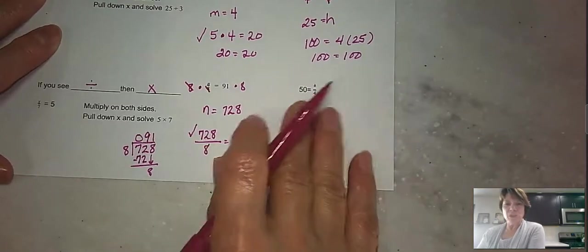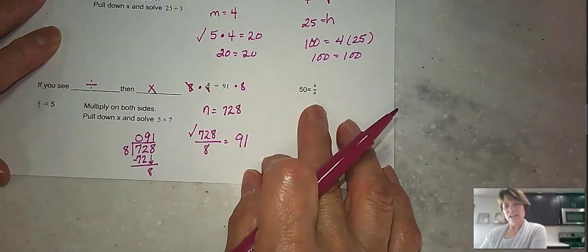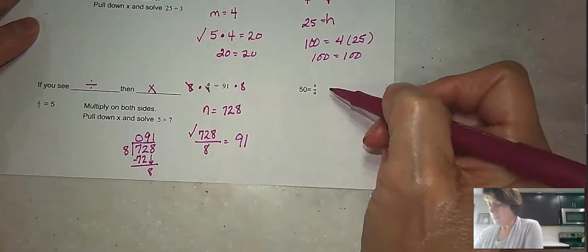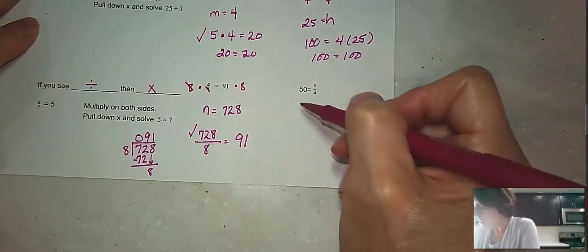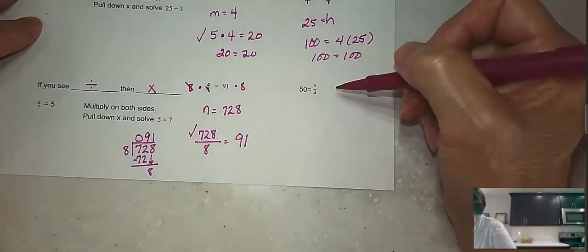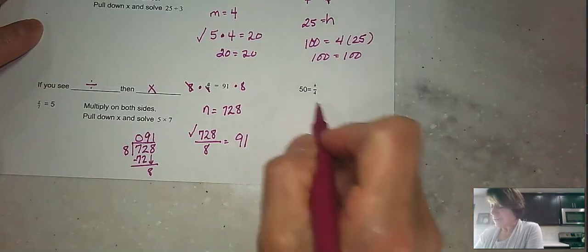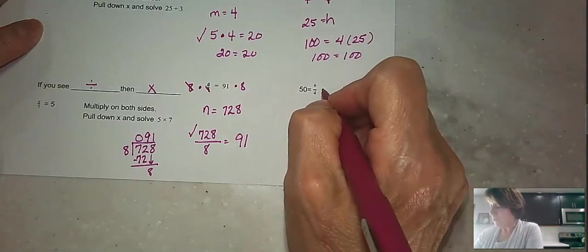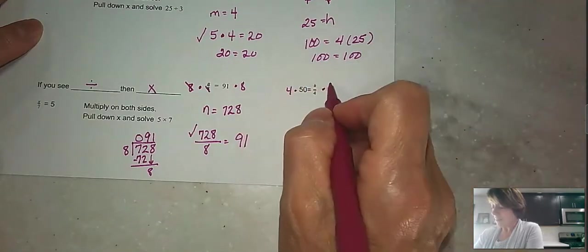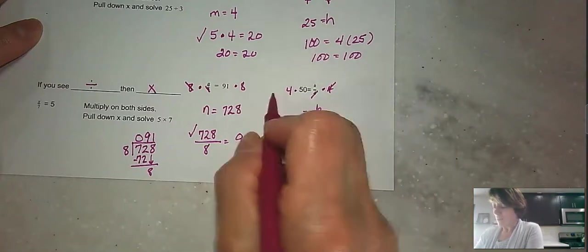Okay, so again, a little switcheroo here. We've got the variable with the division on the opposite side, but again, not a problem. We're just going to do the opposite of what's happening to the variable. So here we see that 50 equals k over 4. That's a tiny little variable there. So we are going to do the opposite of that, and we are going to multiply both sides by 4. These 4s cancel each other out, and I'll say that k equals 4 times 50.